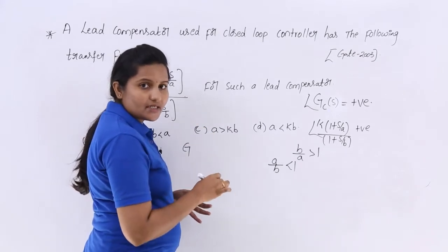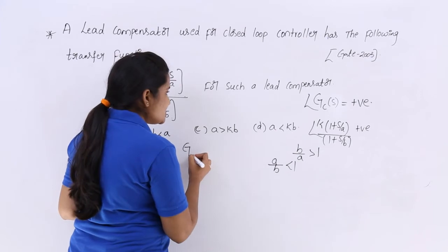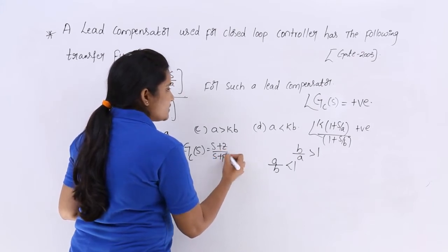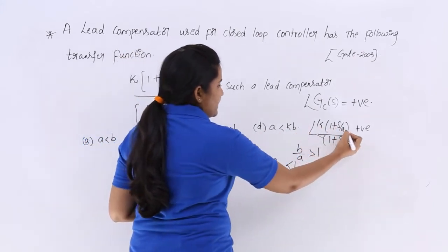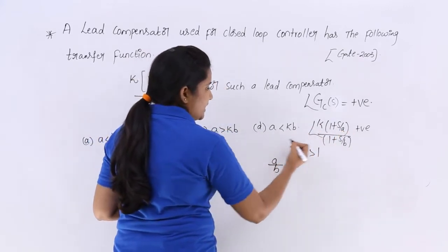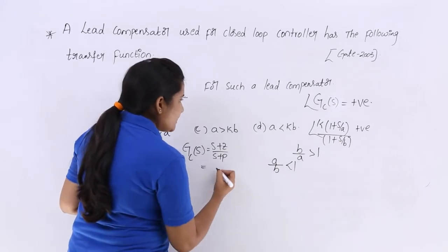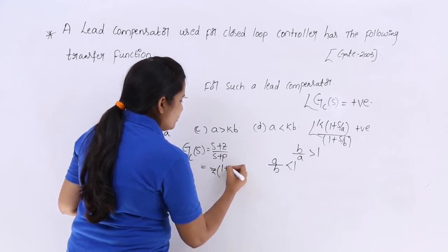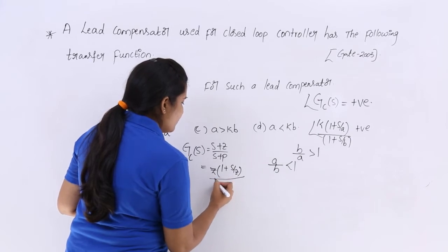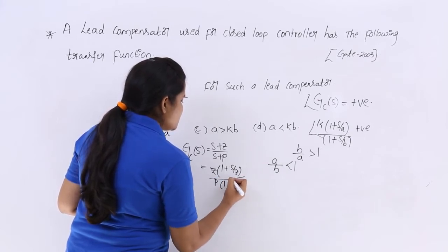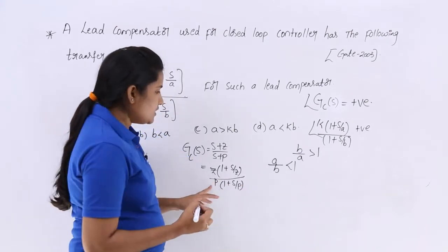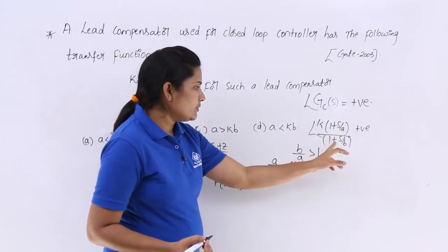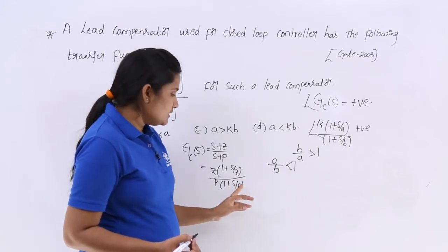When analyzing lead, lag, or lag-lead compensators, we consider the compensator transfer function in the form (S + Z) / (S + P). In the given transfer function, A is in place of Z and B is in place of P. Taking Z common gives Z·(1 + S/Z), and taking P common gives P·(1 + S/P). So K equals Z/P, 1 + S/A corresponds to 1 + S/Z, and 1 + S/B corresponds to 1 + S/P.